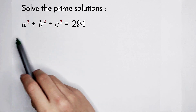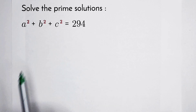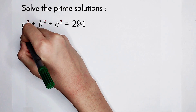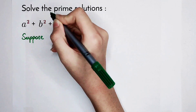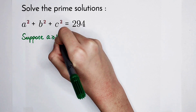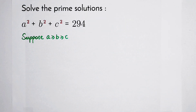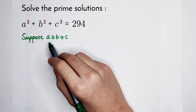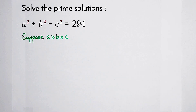You should pay attention to the left-hand side. The left-hand side is a cyclic symmetry formula. That means we should first sort a, b, and c. So I'm going to suppose a is greater than or equal to b, and b is also greater than or equal to c. Of course, you can also sort so that c is the greatest and a is the smallest, or b is the greatest and a is the smallest — it's up to you.